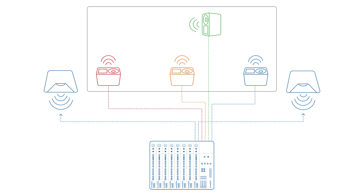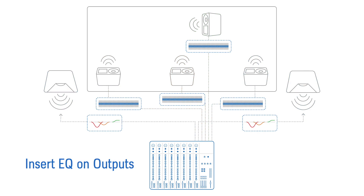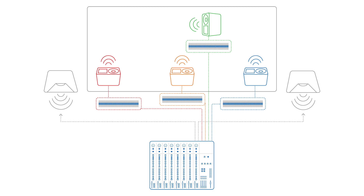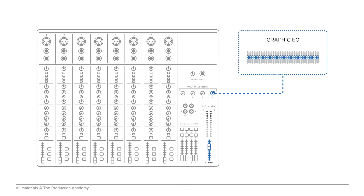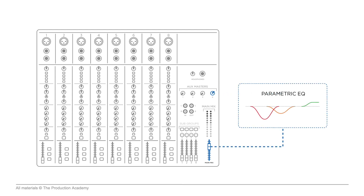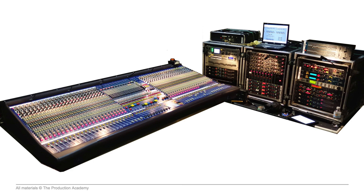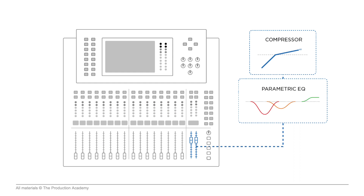Once we have our mixes built and sent to outputs, we can insert EQs on those outputs to control the overall tone of any mix. This could be an overall EQ for the main speakers, or an EQ for each of the monitor mixes. Many people use graphic EQ on their monitor sends to help quickly eliminate feedback, and I personally always use parametric EQ for my front of house mixes. Using EQ on each output can add up pretty quickly, and since analog consoles don't have this built in, they need racks full of outboard gear including all the gates and compressors for the inputs. Of course, digital consoles have all this stuff built in, and we talk about more of these differences later on.